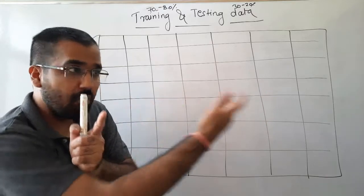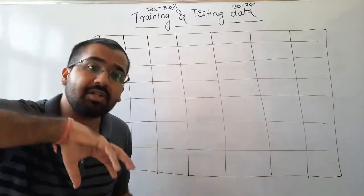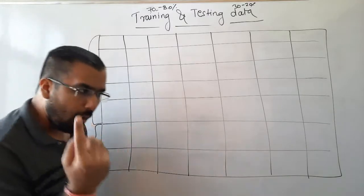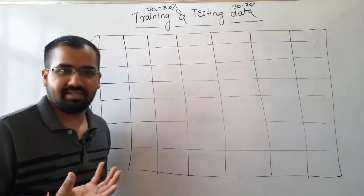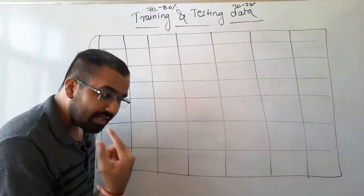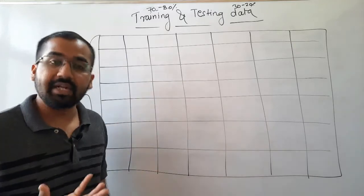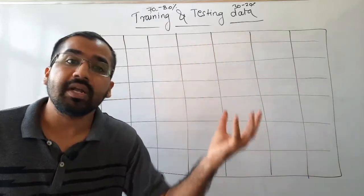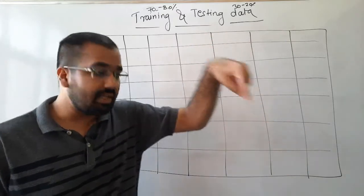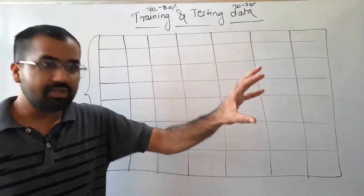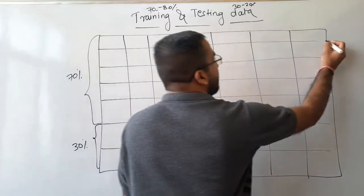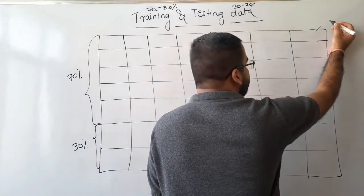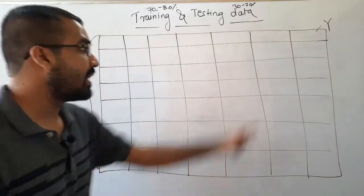That annual sales figure depends on many factors: the number of employees, the number of hours employees worked, the marketing strategies, and many more such factors. These factors are nothing but independent variables — all the factors impacting your annual sales are your independent variable data. The annual sales itself is the target variable or dependent variable, because it depends upon those various parameters.